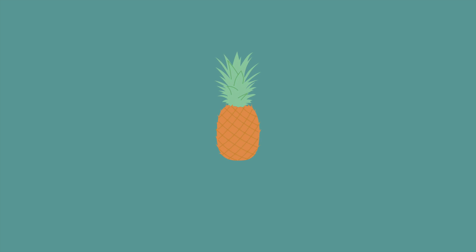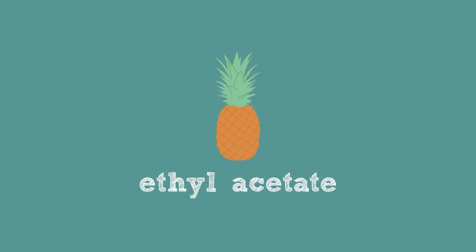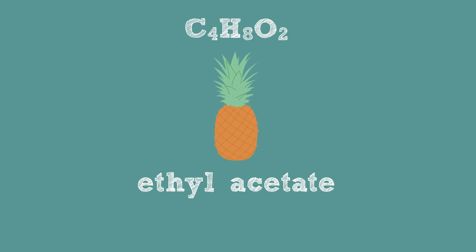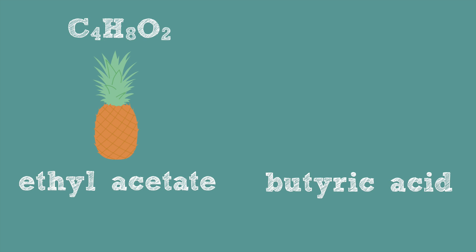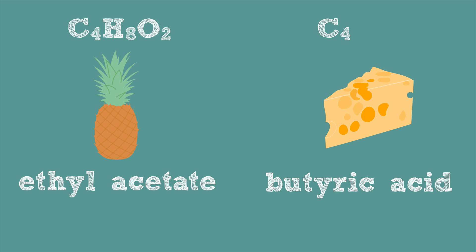If you've ever smelled a ripe pineapple or sweet wine, you know the smell of ethyl acetate. Its molecular formula is C4H8O2. Butyric acid has a putrid, strong smell. It's part of the potent smell in cheese, and in its concentrated form, it smells like vomit. Its molecular formula is also C4H8O2. Yep, it's the same formula as ethyl acetate. So how can they smell different?